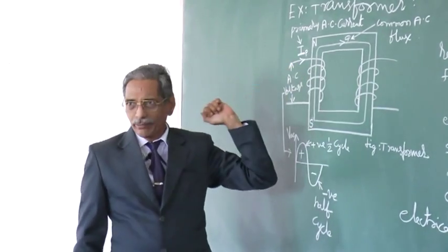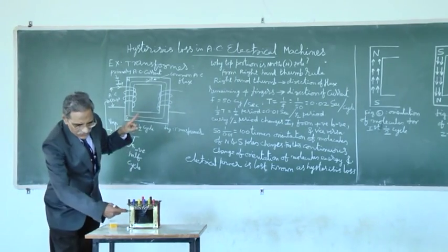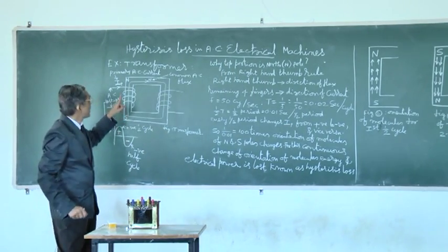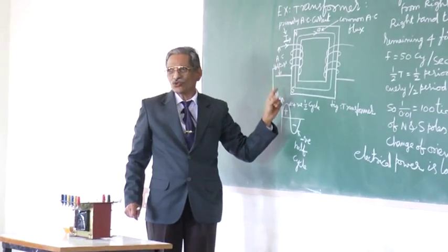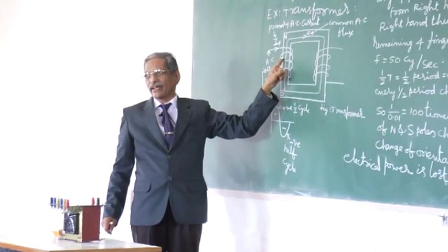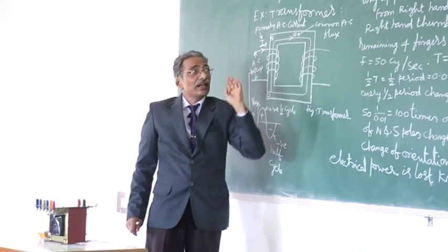Here we have shown only two limbs for easy understanding. So this is the first limb, means this is the core, just like this. On this core a winding is wound. This winding is known as primary winding and this winding is known as secondary winding.